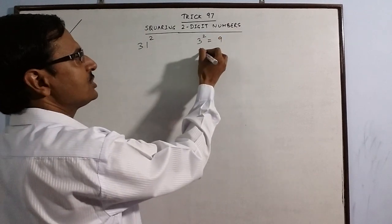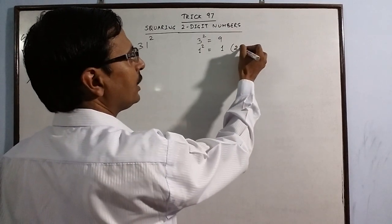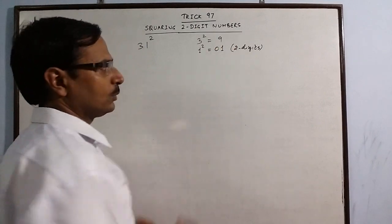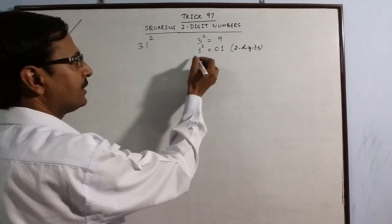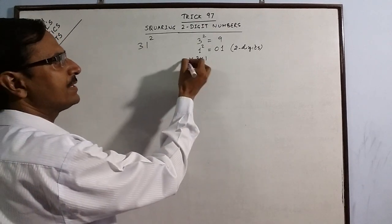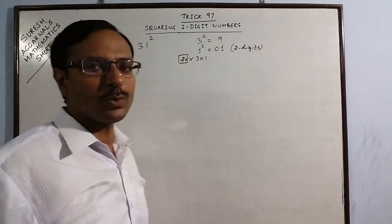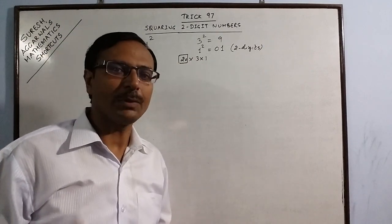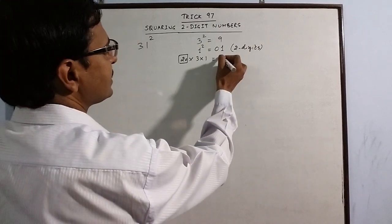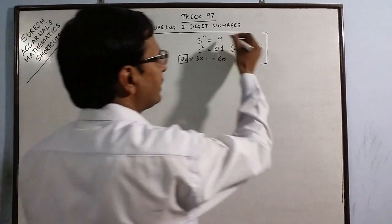Second step is to square the second digit, and just remember here you need to write two digits, so if you have a single digit then put a zero. The third step is to find the product of the two digits and multiply this by 20. This 20 is a fixed constant quantity used in all numbers from 11 to 99. So this is 60.